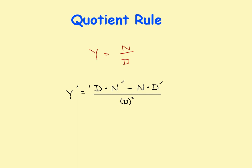So that's the rule. If the original function is numerator divided by denominator, the derivative is the denominator times the derivative of the numerator, minus the numerator times the derivative of the denominator, all divided by the denominator squared. With that rule it's fairly easy to apply. Let's take a look at a couple of examples.